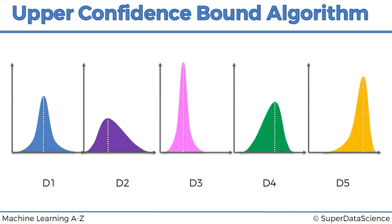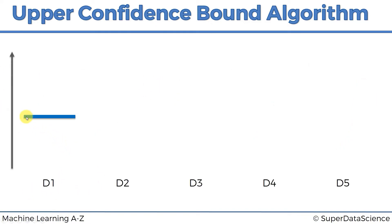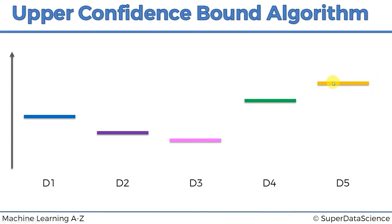We want to maximize our return from the very start. So let's transfer these distributions — or the actual expected return from each distribution — onto a vertical axis. For distribution one, let's say the value is here; distribution two was lower; distribution three even lower; distribution four higher; and distribution five the best. Those are the expected values or returns for each machine on our y-axis. But again, we don't know that.